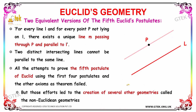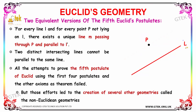Now let's discuss the two equivalent versions of Euclid's fifth postulate. For every line L and for every point P not lying on L, there exists a unique line M passing through P and parallel to L.